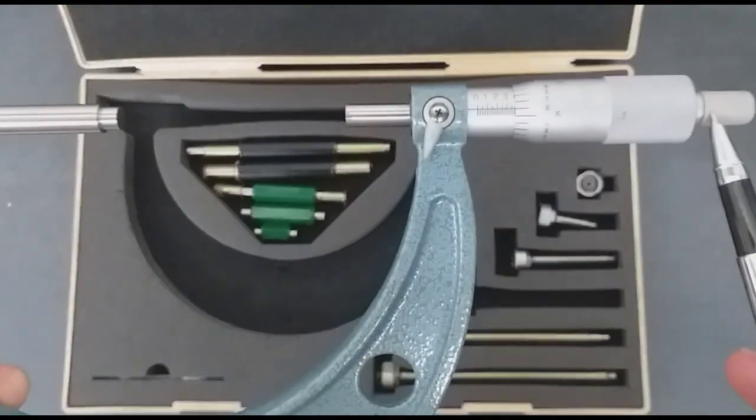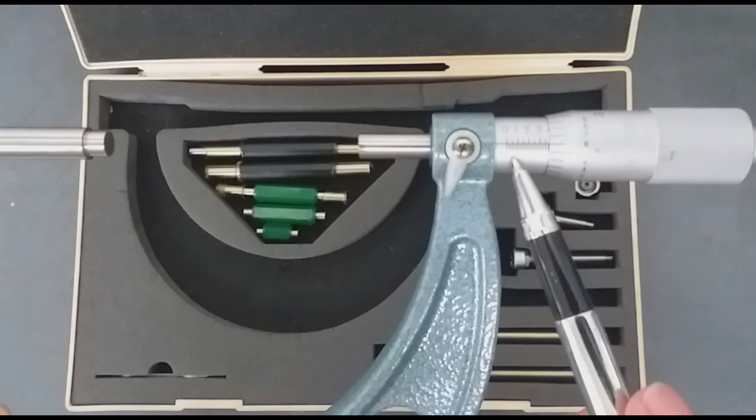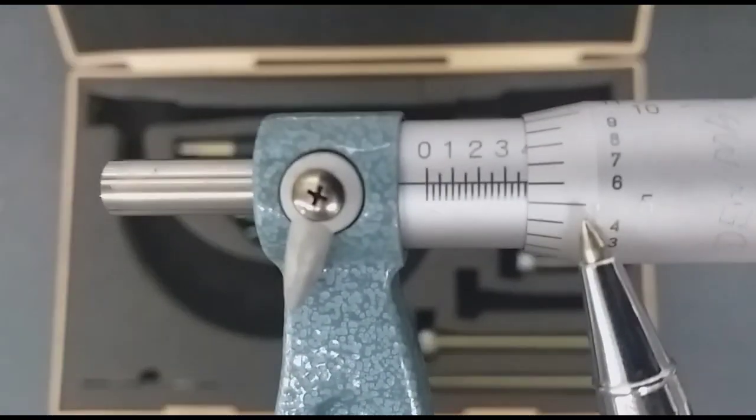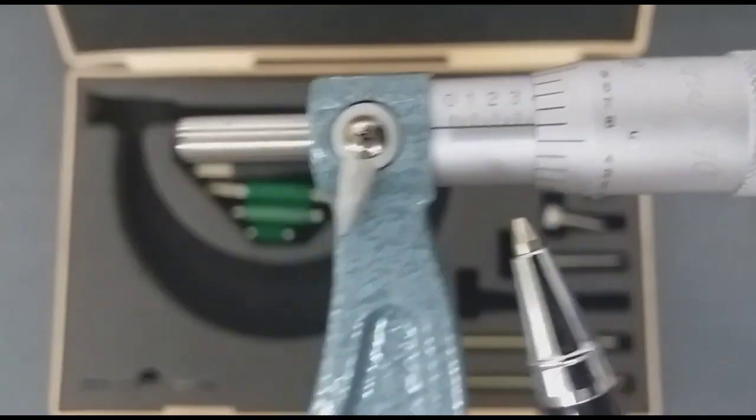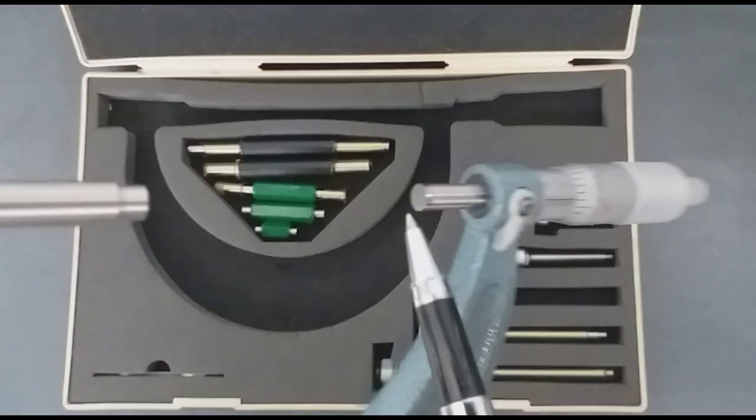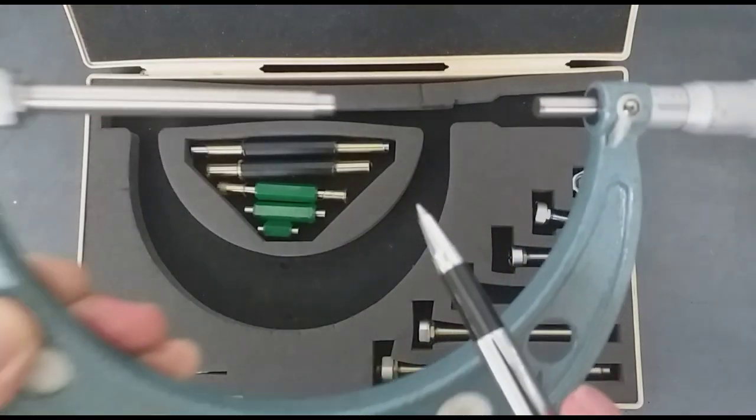That is the graduation of the sleeve in the main scale, and that is the graduation of the thimble. This is the measuring face, and also the other side.